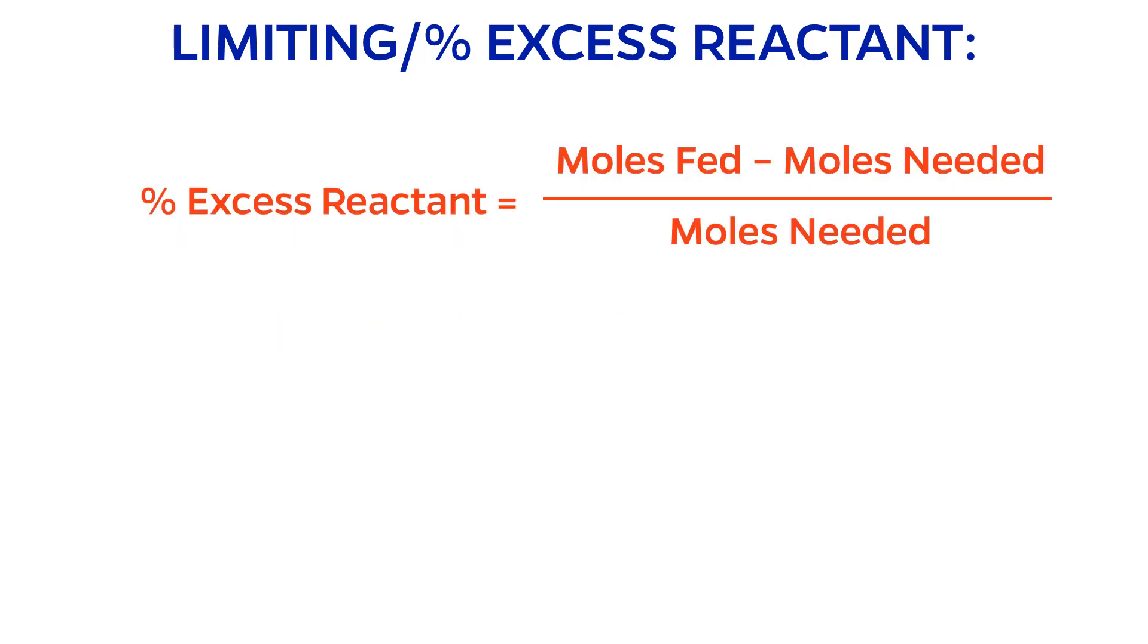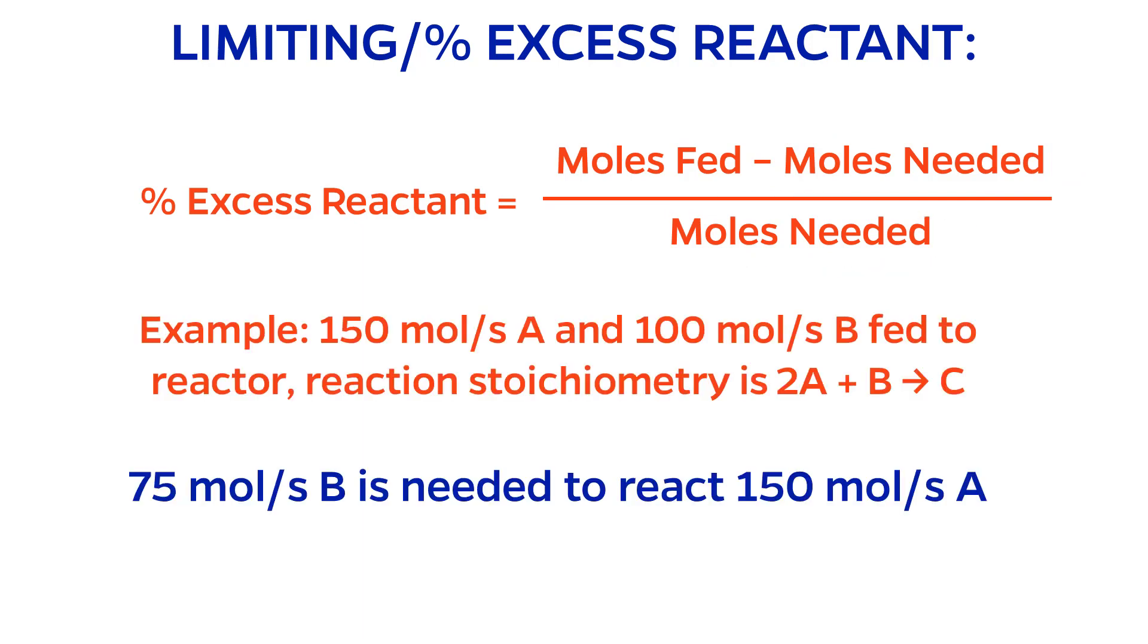The percent excess reactant is exactly what it sounds like. The actual feed flow rate of the excess reactant minus how much reactant would be needed to completely consume the limiting reactant, normalized by how much would be needed. In this example, 75 moles per second of B is required to consume 150 moles per second of A due to the 2 to 1 stoichiometric ratio.